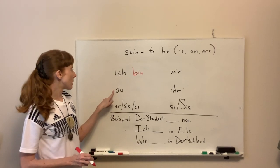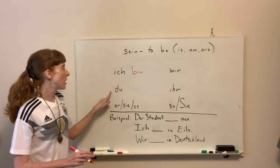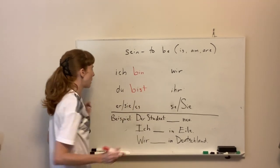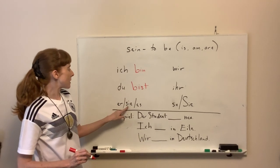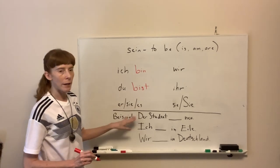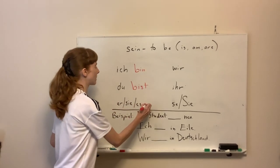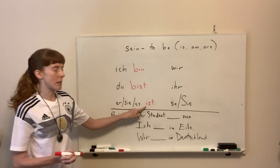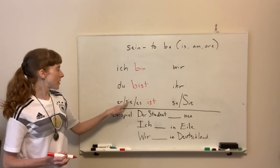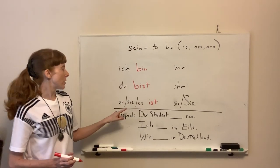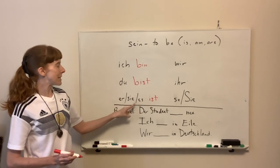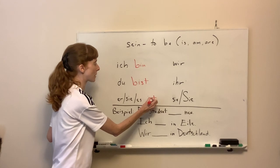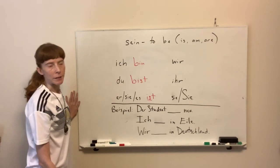Du, the informal word for you, is du bist. And er, sie, and es all have the same form: ist. We can see this is very much like English — he is, she is, it is. In German: er ist, sie ist, und es ist. The only difference is we have a T at the end.